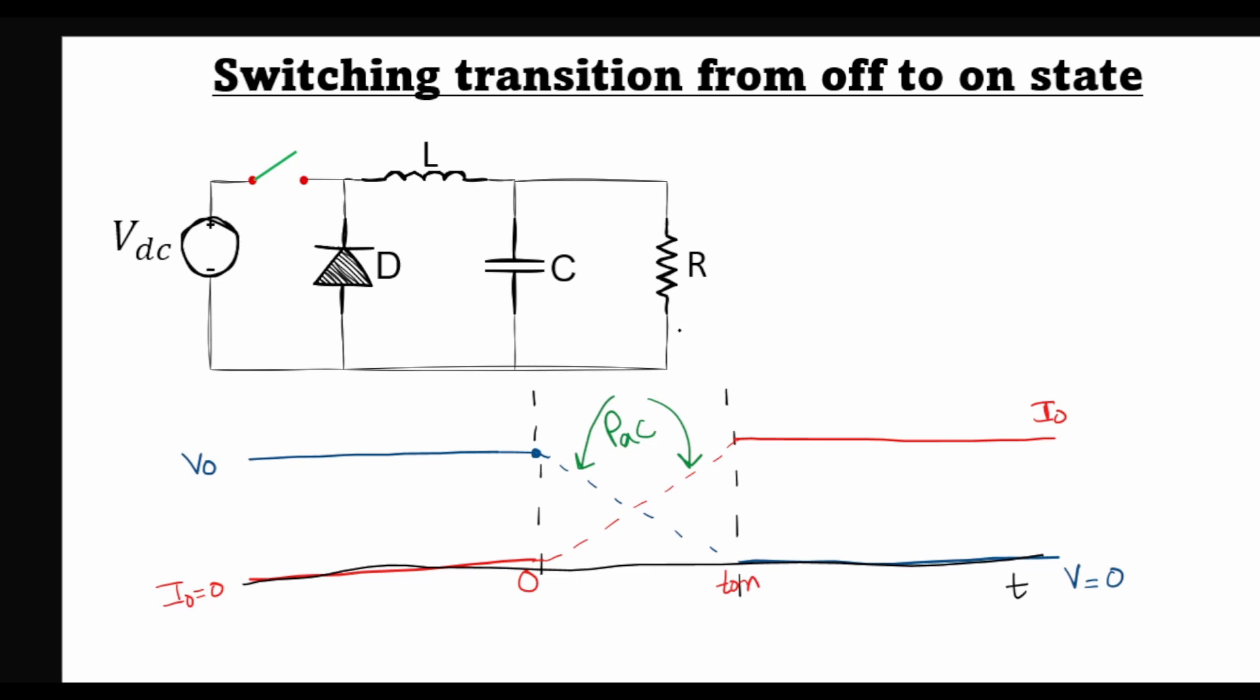We already saw in the previous lecture the waveforms for the voltage and current across the switch during a transition from off state to on state.